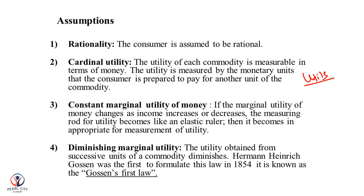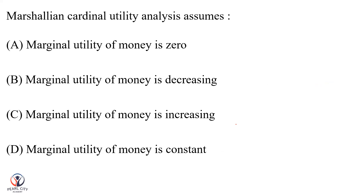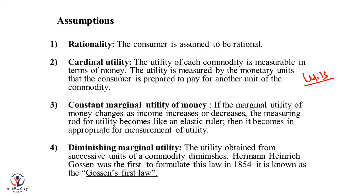We all know the law of diminishing marginal utility — the entire cardinal approach is based on it. That is the first law. The second law is the law of equal marginal utility. The answer is: the marginal utility of money is constant, as the key assumption of marginal utility analysis.